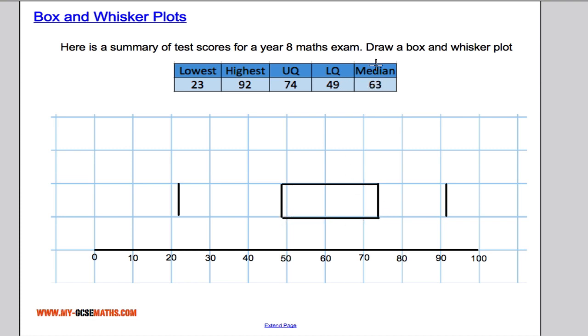The other piece of information I'm told is that the median is 63. So if I go to 63 and draw in that straight line there as well. And finally, just to complete the box and whisker plot, drawing in these lines here. And that's my box and whisker plot completed.